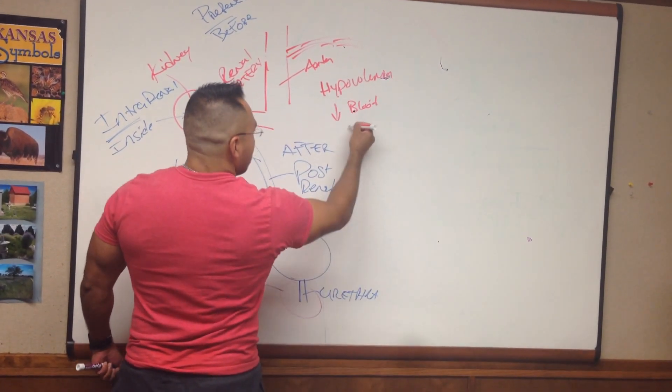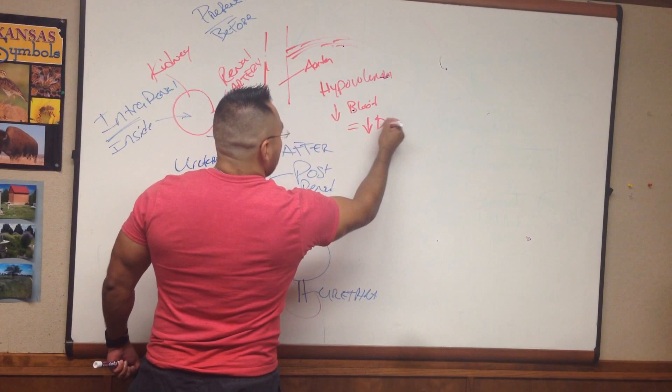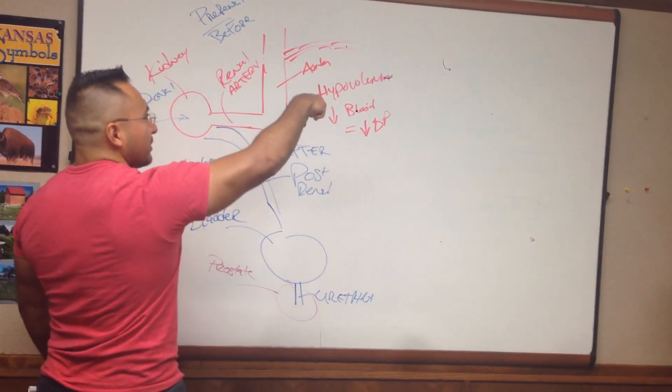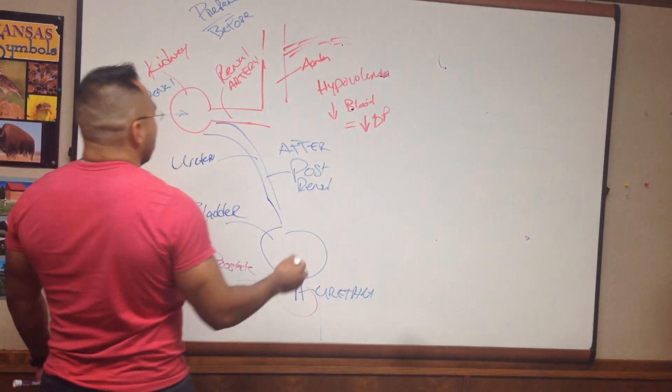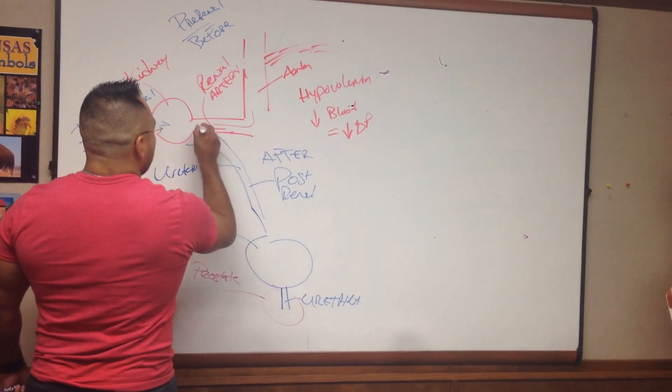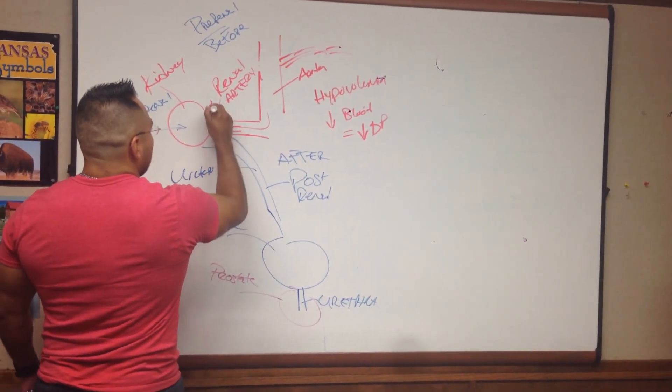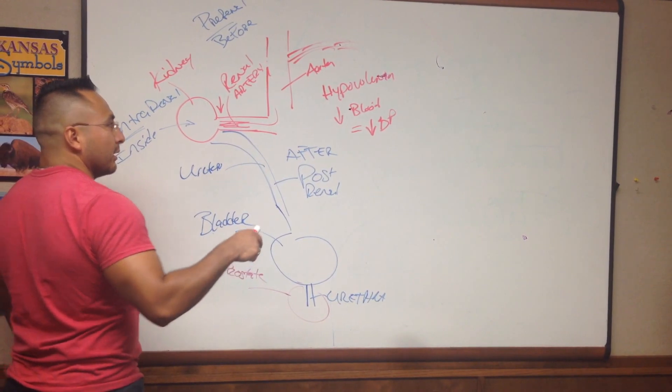Which is the same thing, which will result in decreased blood pressure. If you have decreased blood volume, decreased blood pressure, then the amount of blood that's coming here decreases. So the kidney is getting less blood.